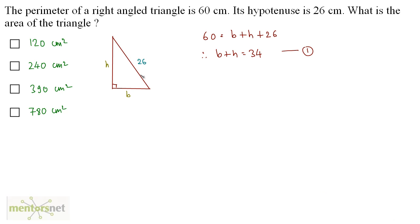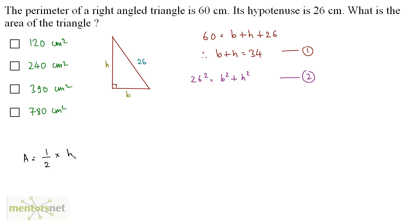Using the Pythagorean theorem, hypotenuse squared equals height squared plus base squared: 26 squared equals b squared plus h squared. Let that be equation 2. The area of the triangle equals half into b times h, so we need the value of b times h.